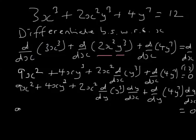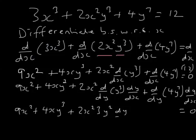So, we've got 9x squared plus 4x times y cubed, plus 2x squared. Differentiate y cubed, that's 3y squared, dy by dx. Then differentiate 4y to the power 7, that's 28y to the power 6, dy by dx, and that equals 0.